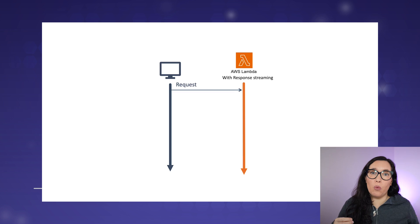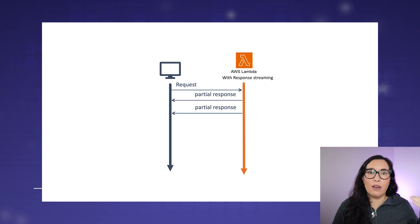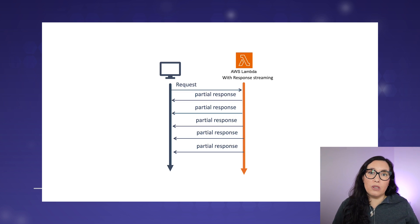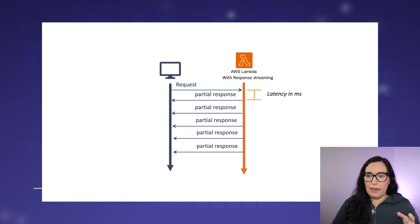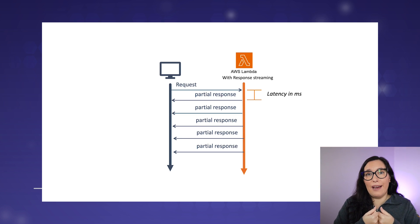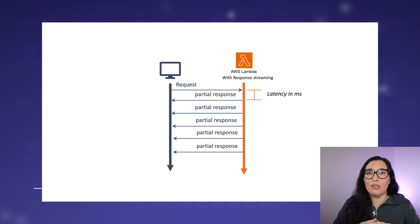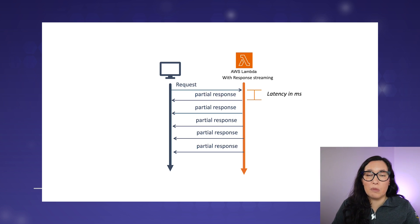Let's see how the previous example works now with the feature enabled. We have the client making a request to Lambda, and then Lambda will start sending partial responses back to the client as soon as it has a bit — it will just send it back, until the full response is created. This is achieved by Lambda generating the response and buffering it out as it has a little piece of that response. Now the latency perceived by the user is quite small because the user is getting input all the time, keeping them engaged. Imagine a function processing a big image — you can start seeing the image coming down as a buffer and filling your screen as it gets processed, rather than seeing a white screen until the image is fully loaded.